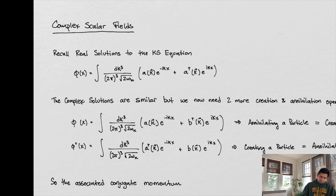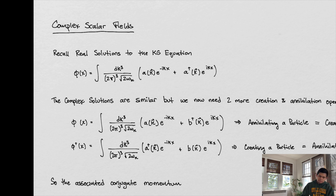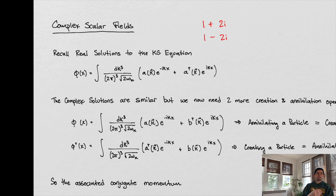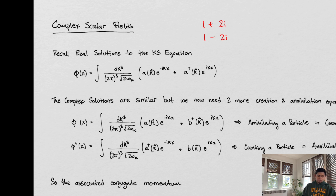A complex scalar field is a scalar field, but this time we're adding complex numbers. One of the ways to do that is to consider the complex conjugate. For example, the complex conjugate of 1 plus 2i is 1 minus 2i — everywhere you see an i, you just make it negative. You can do the same thing with functions: the complex conjugate of some function f(x) is the same function but with every i flipped in sign.